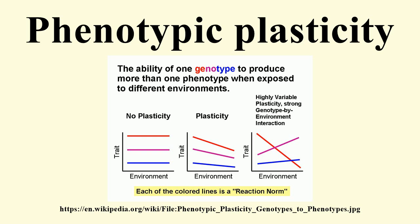Phenotypic plasticity in plants includes the allocation of more resources to the roots in soils that contain low concentrations of nutrients, and the alteration of leaf size and thickness. Dandelions are well known for exhibiting considerable plasticity in form when growing in sunny versus shaded environments. The transport proteins present in roots are also changed depending on the concentration of the nutrient and the salinity of the soil. Some plants, Mesembryanthemum crystallinum for example, are able to alter their photosynthetic pathways to use less water when they become water or salt stressed.